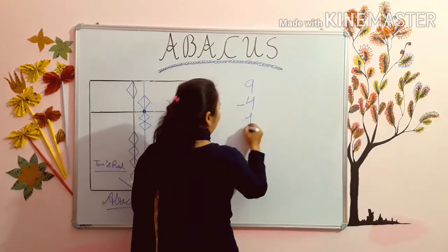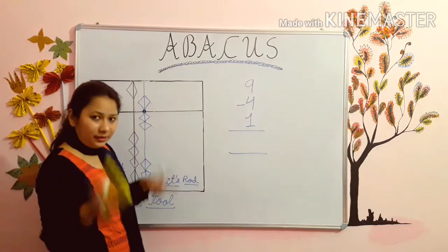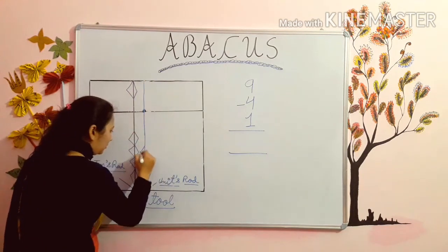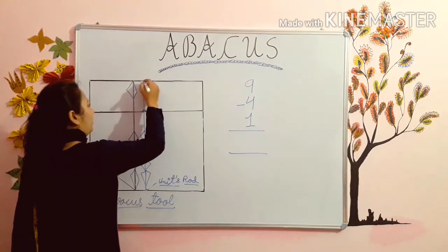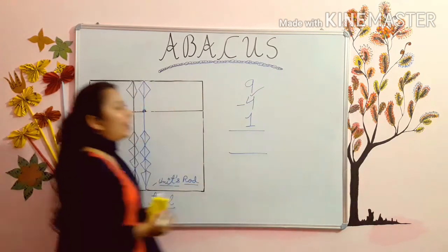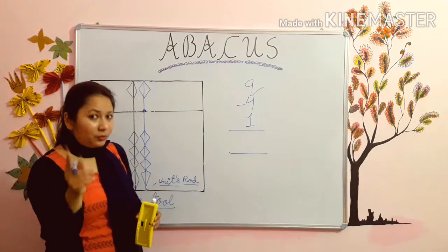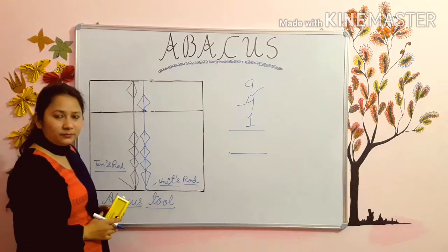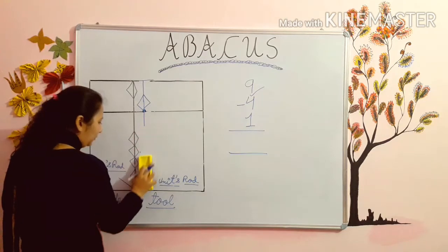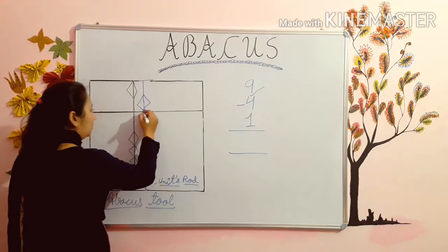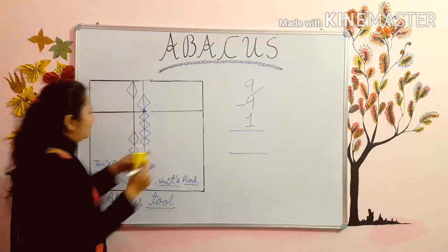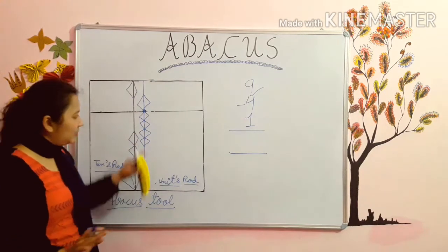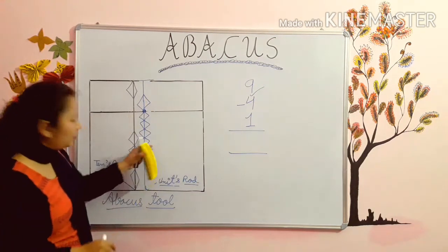The next sum is 9 minus 4 plus 1. Set your abacus — upper beads up and lower beads down. First of all you have to add 9. For 9, first of all you will use 5 — so 5 bead down. Then you will put 4 beads up — 1, 2, 3, 4. Now this is your 9. Count — 5, 6, 7, 8, 9. We have added 9. Added means 5 we have put down and 4 beads we have put up.